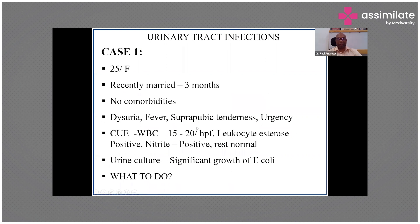This is classic cystitis. The urine examination showed significant WBCs — more than five is significant. Leukocyte esterase, which is produced by the WBCs, was positive. Nitrite, which is a very specific test for urinary tract infection, was positive, and the rest were normal. Urine culture showed significant growth of E. coli, which is the commonest bacteria — a classical presentation.